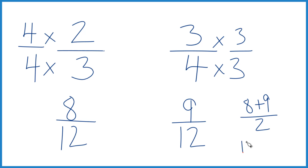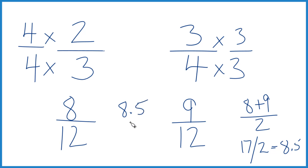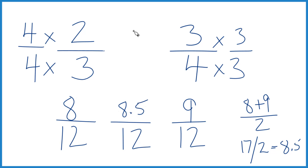That's seventeen over two, which equals eight point five. So eight point five over twelve — that fraction is halfway between eight-twelfths and nine-twelfths. I really don't like this eight point five here, so I'm going to double the numerator and denominator. So eight point five times two is seventeen.